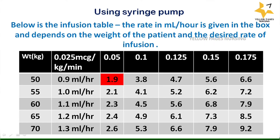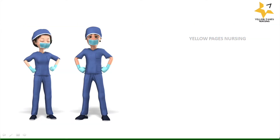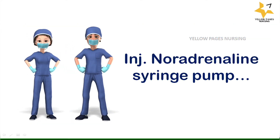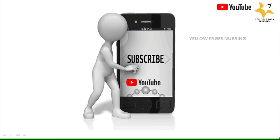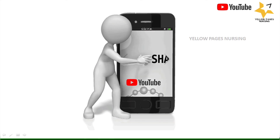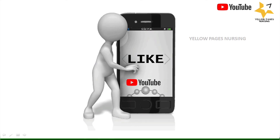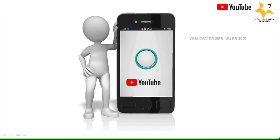Here is a reference table where the rate in ml per hour is calculated depending on the patient's weight and the desired rate of infusion. That covers the calculation of injection noradrenaline infusion using a syringe pump, including both conversions: micrograms per kg per minute to ml per hour, and ml per hour to micrograms per kg per minute. If you find this video useful, please like and subscribe, and hit the bell icon for instant notifications. Thanks for watching and have a nice day.